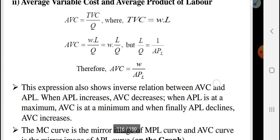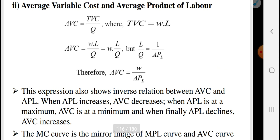Average variable cost and average product of labor also have an inverse relation. Average variable cost equals total variable cost over quantity, and total variable cost is wage times labor. So average variable cost equals wage times labor over quantity, which simplifies to wage over average product of labor.